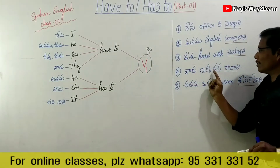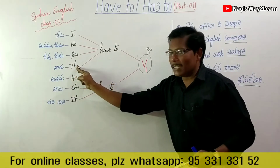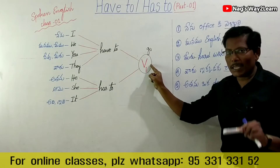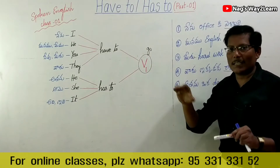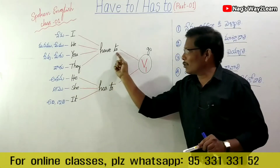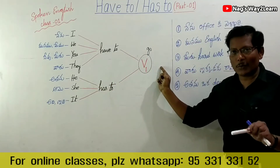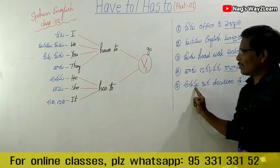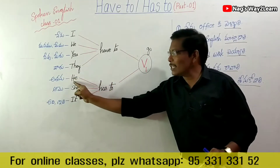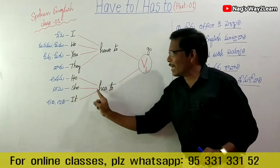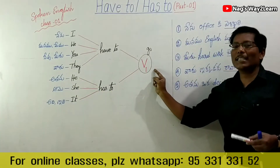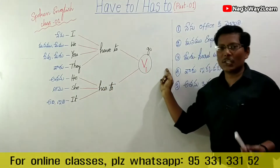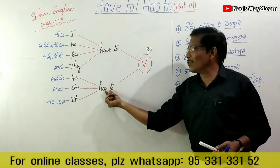Next: we have to speak English. Are people here? They have to come here. So he has to take a decision.